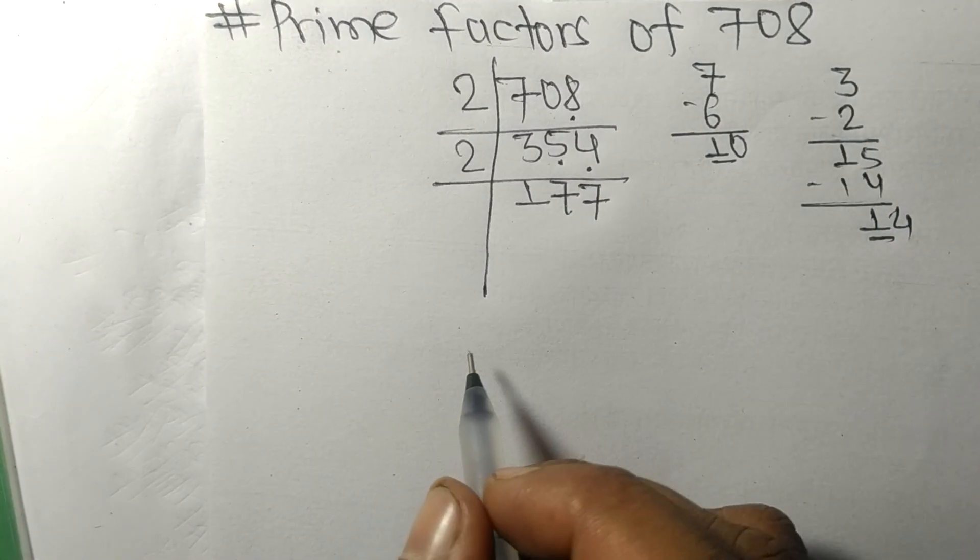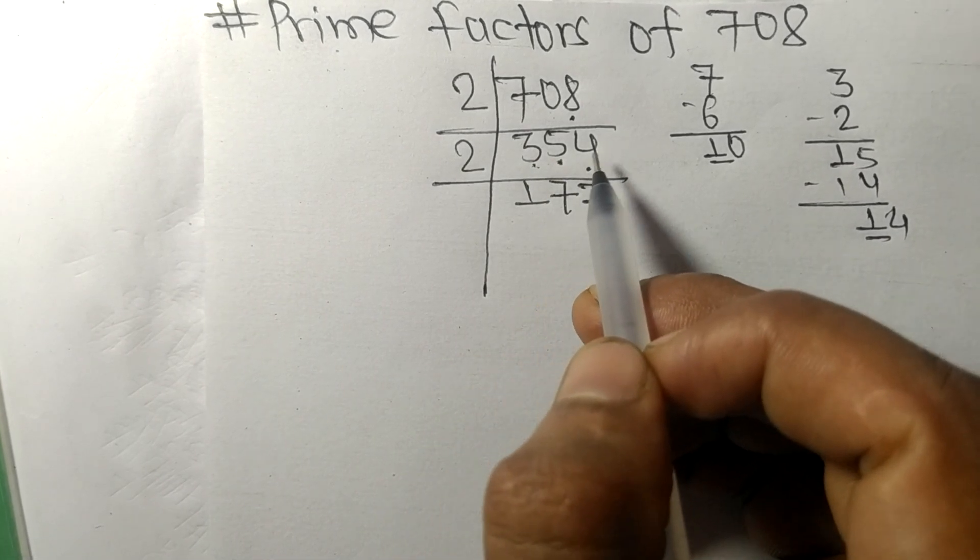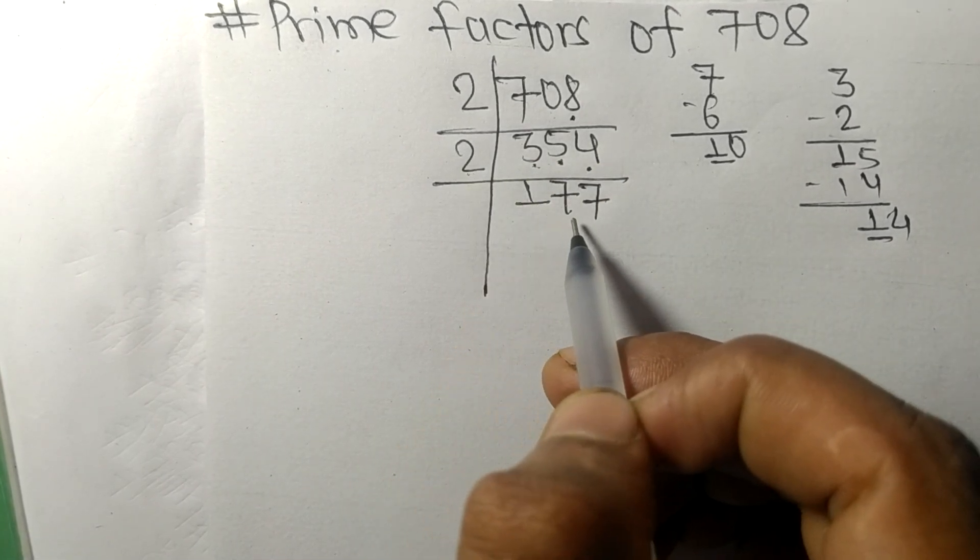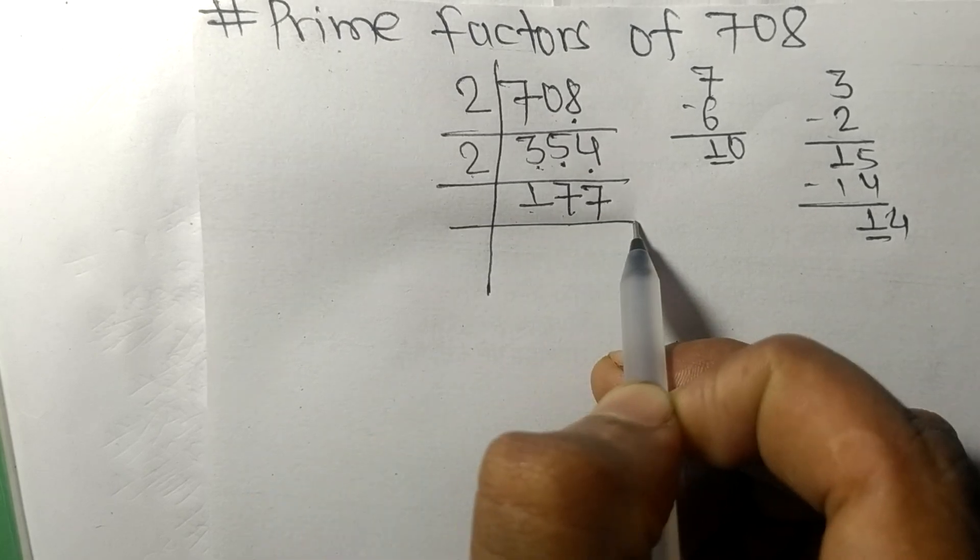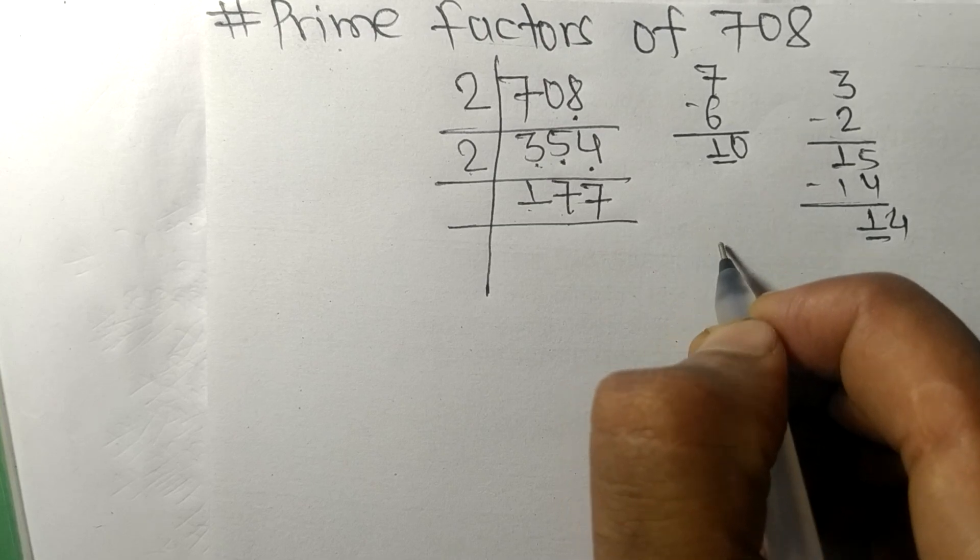On dividing 354 with 2 we got 177. Now when we add all these numbers, that is 1 plus 7 plus 7, then we get 15.